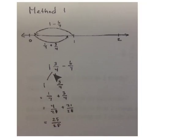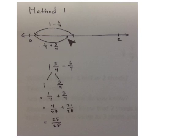A second way to solve 1 and 3 fourths take away 6 sevenths: using the number line, we separate our 1 and our 3 fourths. Do 1 take away 6 sevenths, then add back in our 3 fourths. Numerically, we get 1 seventh plus 3 fourths. Getting the common denominator of 28: multiply 1 seventh times 4 over 4, and 3 fourths times 7 over 7, to get 4 28ths plus 21 28ths, which equals 25 28ths.